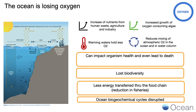The ocean is losing oxygen too. This loss of oxygen is caused by a number of factors. When you combine increased nutrients from human waste, agriculture, and industry with warming water, it can lead to an increase in oxygen consumption, particularly by algae. Warm water holds less oxygen. And a reduced mixing of the ocean also causes a loss of oxygen. You've probably seen aerators in fountains and small ponds to mix the water so fish and plants can breathe — the ocean needs very similar mixing in order to maintain oxygen. A stratified ocean often leads to an ocean with less oxygen.